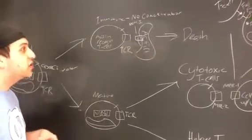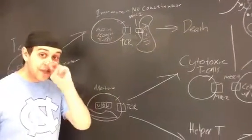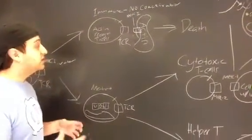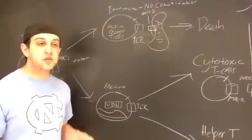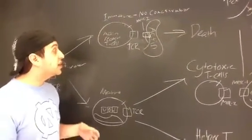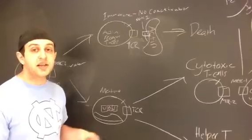And it recognizes it as essentially being self. And that self-recognition shows that that's something that should be in the body, and it signals to the cell that we don't need that T-cell because we don't need an immune response on that antigen. And it kills itself.